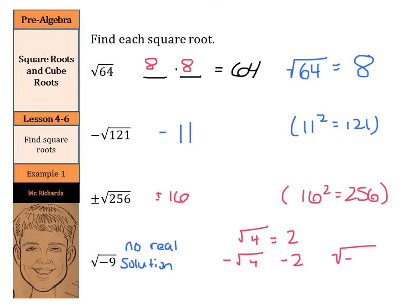With the square root of negative 4 — for the square root of 4, 2 works because 2 times 2 is 4. It works with the negative of the square root because the square root was 2, and then it's the negative. But when you go to start testing numbers like 2 times 2, well, that's a positive 4. And even negative 2 times negative 2 is a positive 4. So when you get the negative inside the square root, there actually is no real solution, since no number times itself can be negative.